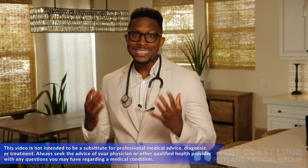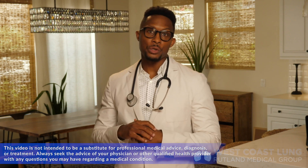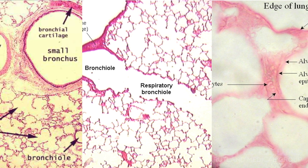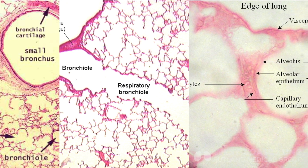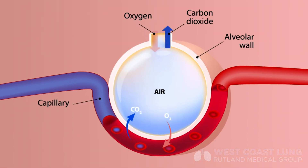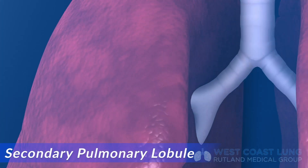Before we get into CT scans and how exactly to read a high-resolution chest CT, we have to understand what the lung looks like under a microscope. Let's think about lung histology. When you look at the lung under a microscope, what you see are a collection of cells that make these air sacs or these balloons. These balloons are called alveoli. If you zoom in to an alveolus, what you're going to see is a capillary membrane and your red blood cells running through that capillary membrane — this is where gas exchange takes place. This basic unit of function of the lung is called the secondary pulmonary lobule.